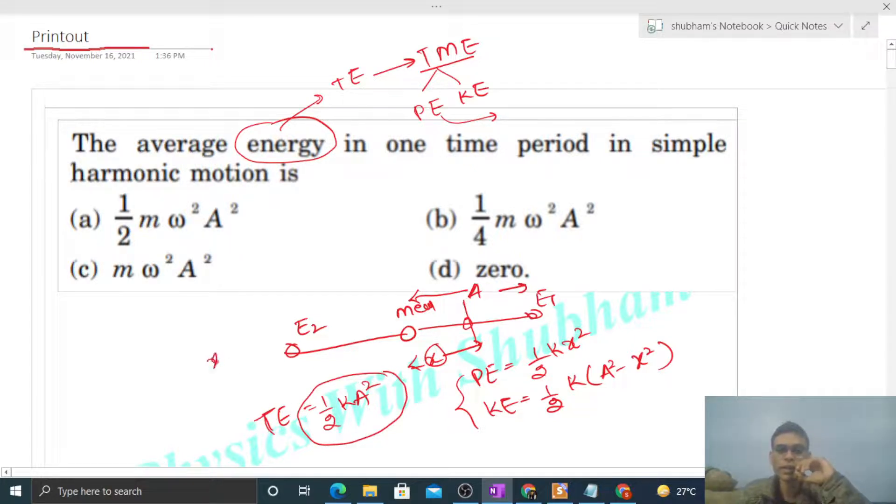At every position, the total energy will be constant. So in one time period, wherever the particle is, its total energy will be constant, and the average of a constant will be the same.